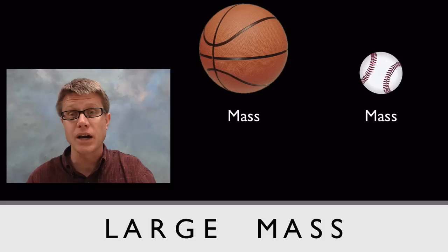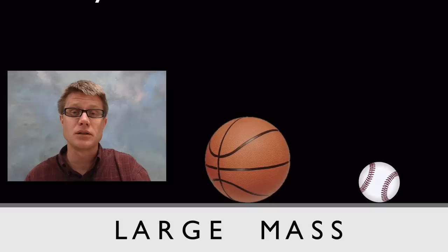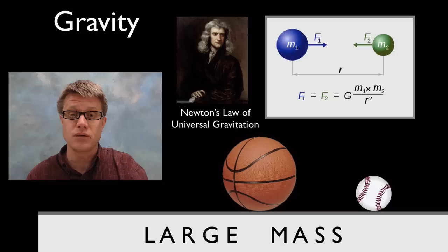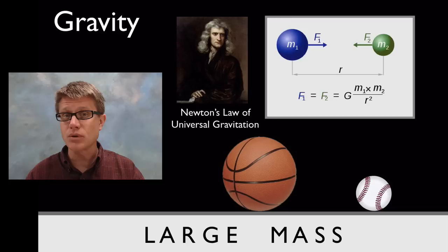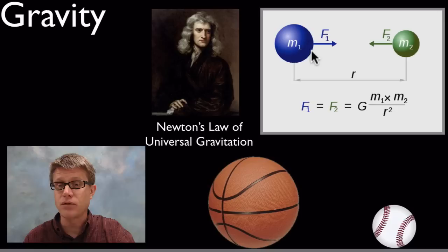Here's a great example. If we have a basketball, a baseball, and a large mass called the earth, and we let them go, they fall to earth. That's because of the gravitational fields around those objects that cause an attractive force. Newton quantified this — we don't know exactly what gravity is, but we can measure it using Newton's law of universal gravitation.